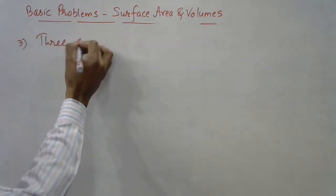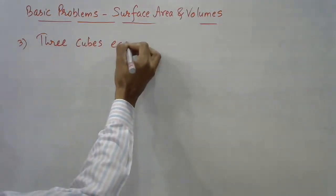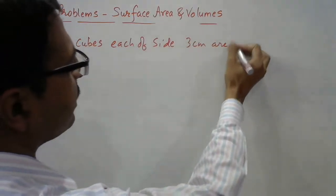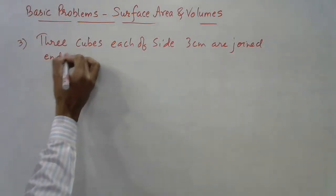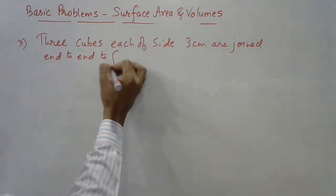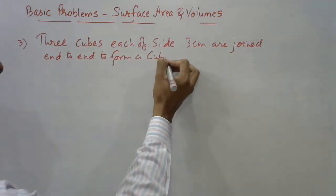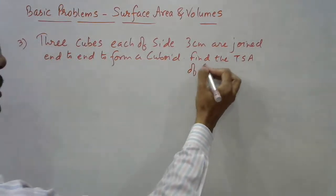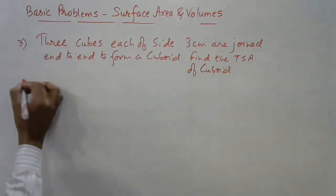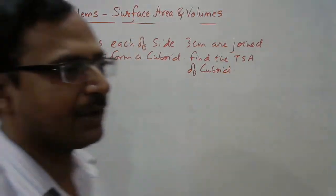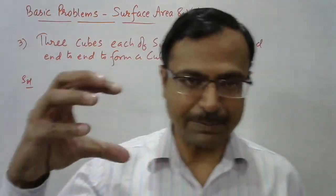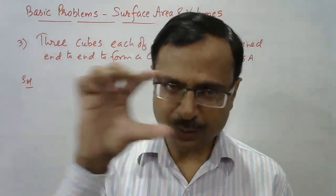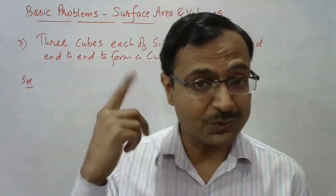Question 4: 3 cubes, each of side 3 cm, are joined end to end to form a cuboid. Find the total surface area of the cuboid. End to end means where one cube ends, the next one starts, and where the second ends, the third begins. So all three are placed in a line and joined. If you place small cubes in a line and join them, visualize what figure is formed.